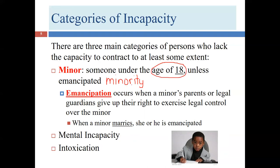In the United States, most people are over 18, so under-18s are numerically a minority, but the legal term has its own meaning regardless of population ratios. The age of majority used to be 21 in the U.S., and some states may still use 21, but in Texas it's 18. Know that for the test.